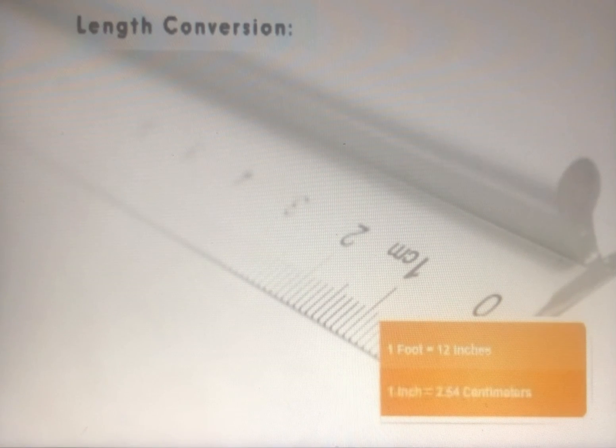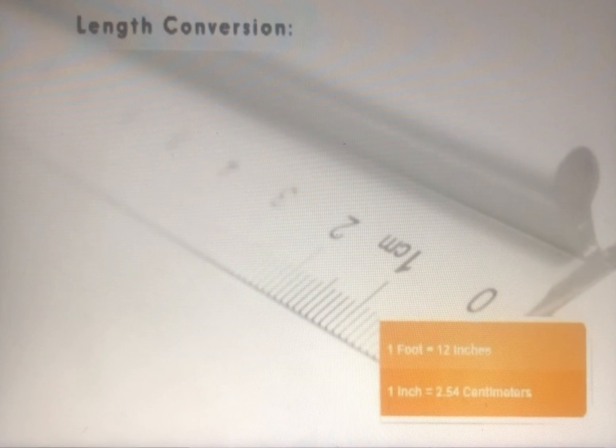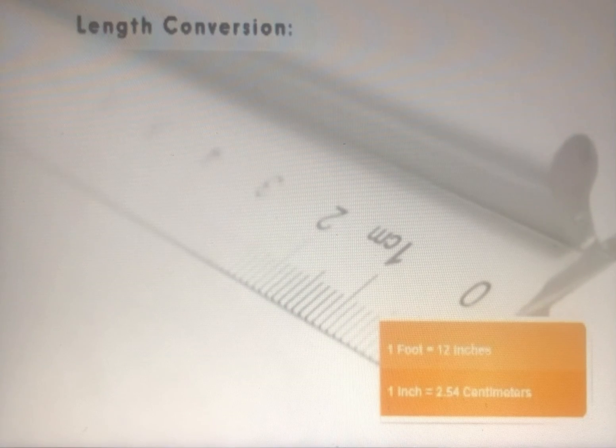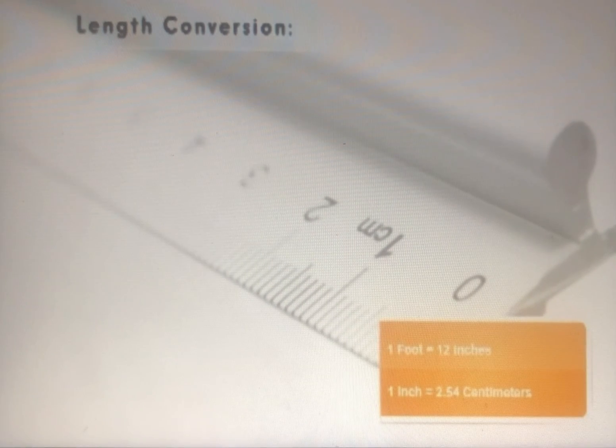Then you can use the conversion formula, 1 inch is equal to 2.54 centimeters, to find the equivalent length in centimeters.